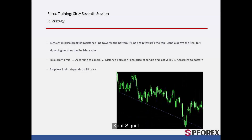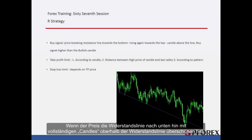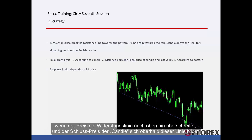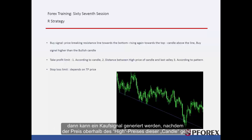Buy Signal: When price passes the resistance line towards the bottom with complete candles over the resistance line and then returns to the given resistance line, if price crosses the resistance line towards the top and the close price of a candle forms above this line, then a buy signal is generated after the price goes higher than the high price of that candle.